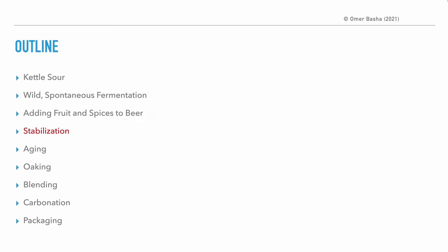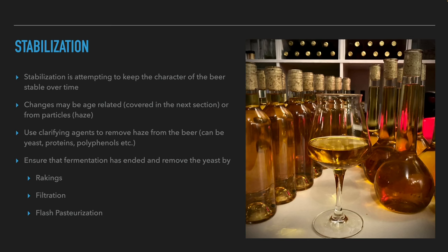Now that we've talked about adding fruits and spices, we move on to stabilizing the beer. Stabilization means preserving the flavor and aroma of the beer so they will not change over time. Changes can be related to aging or to haze-forming compounds. To remove haze-forming compounds — such as yeast, proteins, polyphenols, and more — brewers use clarifying agents. To maintain flavor and carbonation, it is important to remove yeast from the beer by racking, filtering, or rapid pasteurization.